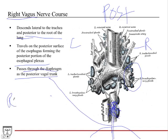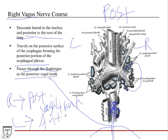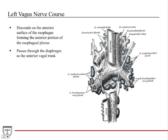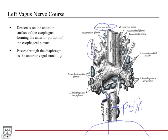The left vagus nerve is the anterior vagal trunk. A mnemonic is to think of a steering wheel: right hand on the anterior top portion, left hand on the bottom — so the top is anterior and the bottom is posterior. The left vagus descends on the anterior surface of the esophagus, traveling in front of the aortic arch, and it forms the anterior portion of the esophageal plexus. It then passes through the diaphragm as the anterior vagal trunk.